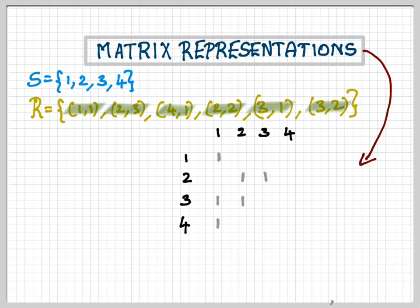3,1 has 1, 3,2 has 1. The rest is filled with zeros. As you can see, 1,2 is not in the relation, so it should be 0, and so on.